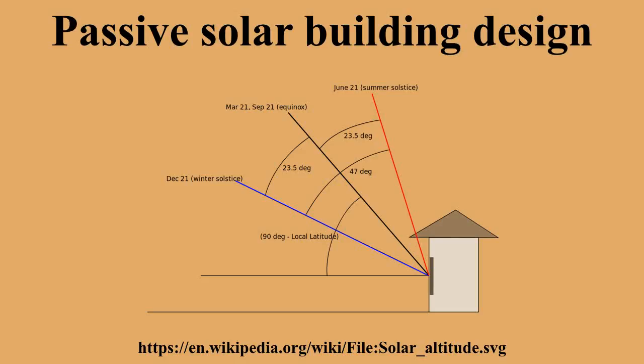Passive energy gain. Passive solar technologies use sunlight without active mechanical systems. Such technologies convert sunlight into usable heat, cause air movement for ventilating, or future use, with little use of other energy sources. A common example is a solarium on the equator side of a building.